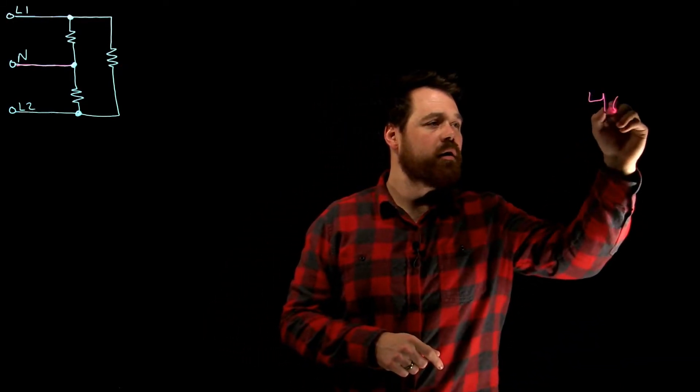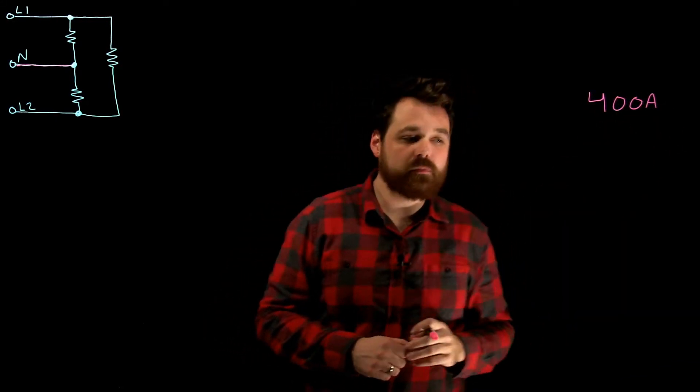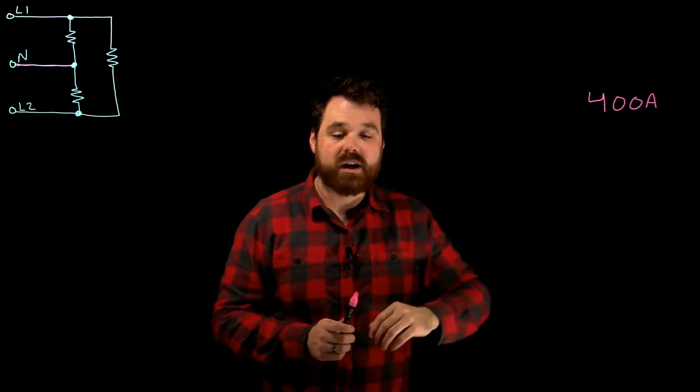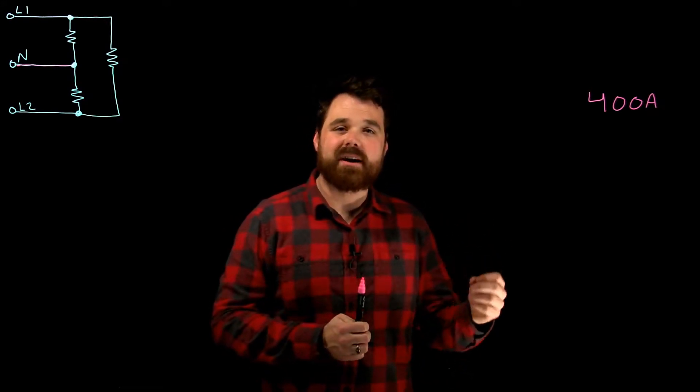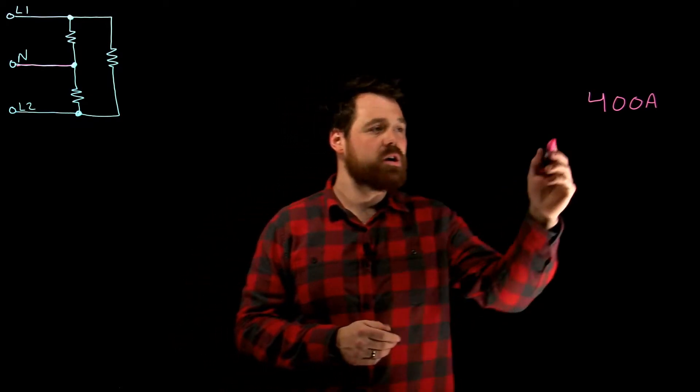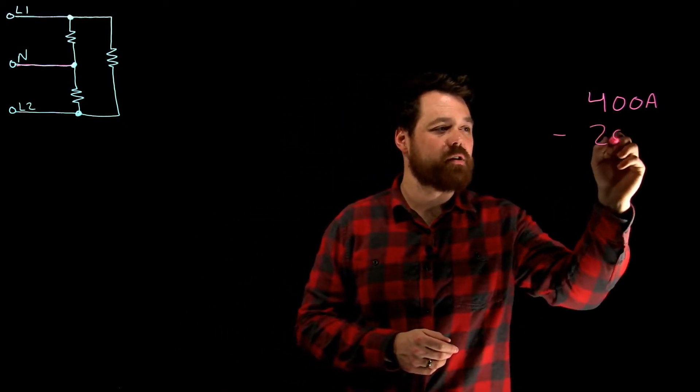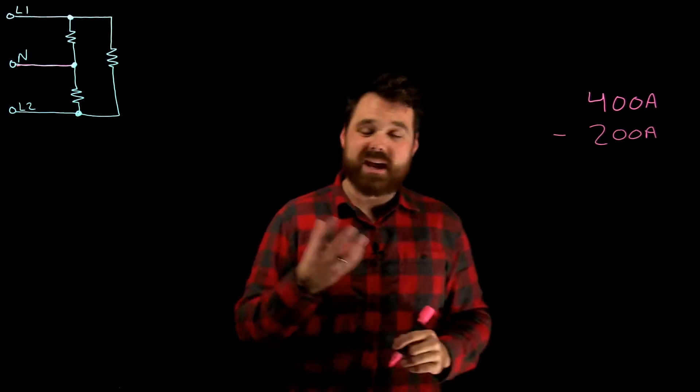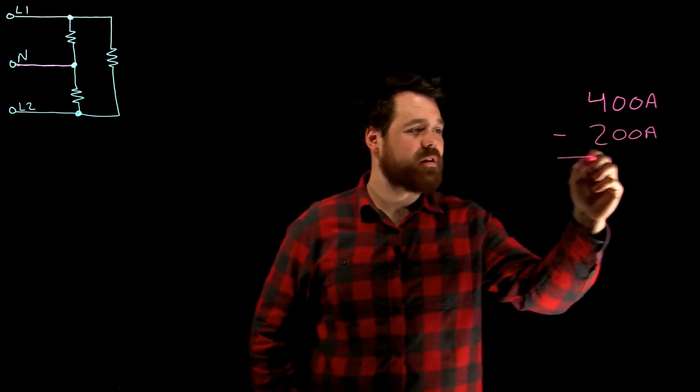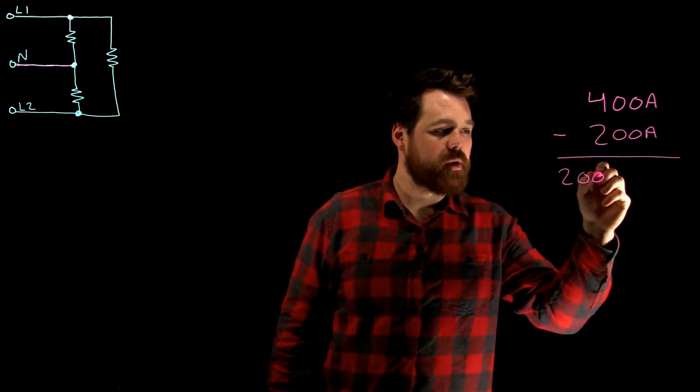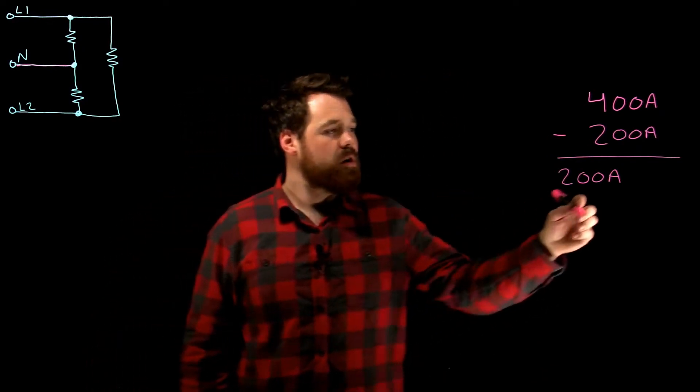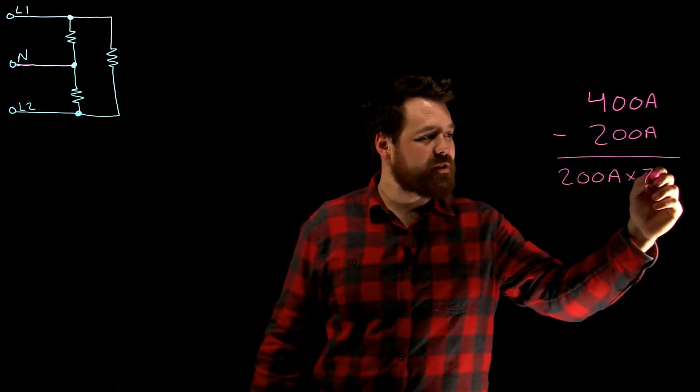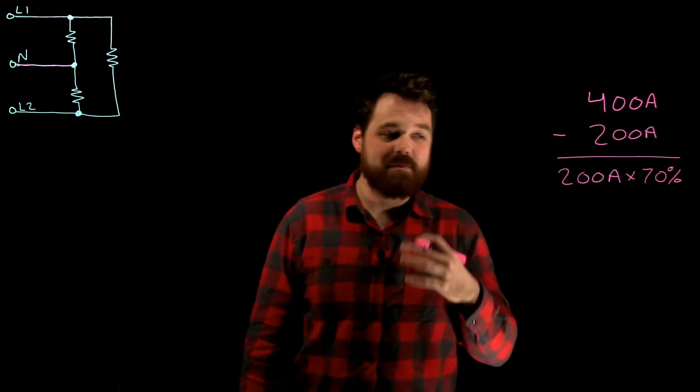If we had 400 amps, what it tells us is other than the first 200 amps you can apply a demand factor of 70%. So what we need to do is we need to minus that 200 amps because we cannot apply a demand factor to that, which gives us a remainder of in this case 200 amps, not always going to be 200 amps.